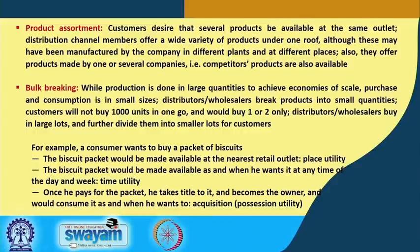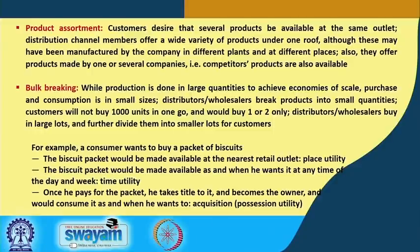To illustrate with an example: a person wants to buy a packet of biscuits. The biscuit packet would be made available at the nearest retail outlet, although the biscuits may have been manufactured several miles away — this is place utility. The biscuit packet would be made available as and when the customer wants it, at any time of the day or week — this is time utility. And once he pays for the biscuit packet, he takes title to it and becomes the owner — this is acquisition or possession utility.